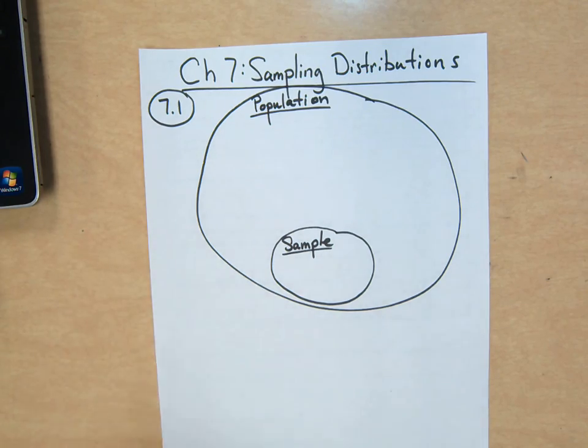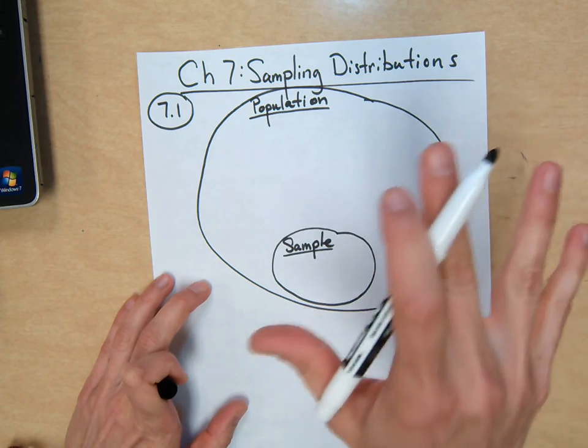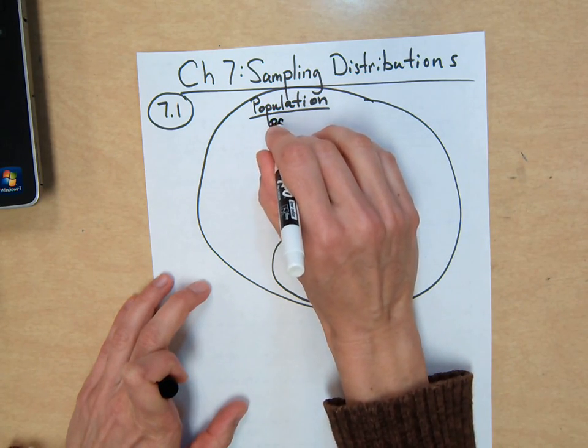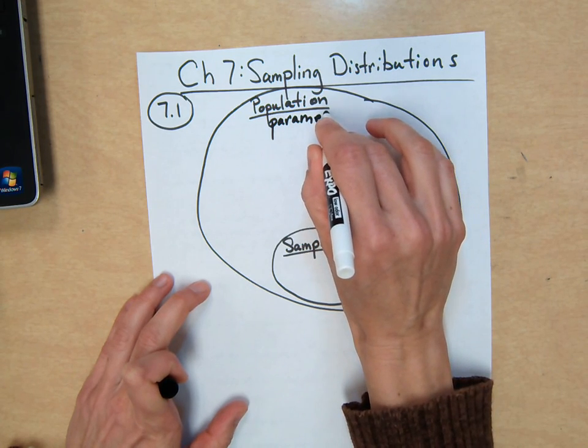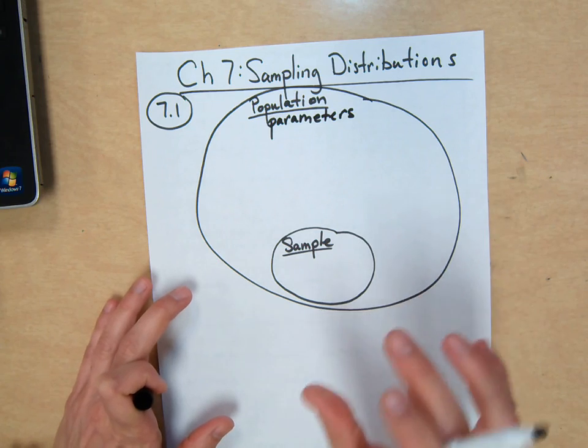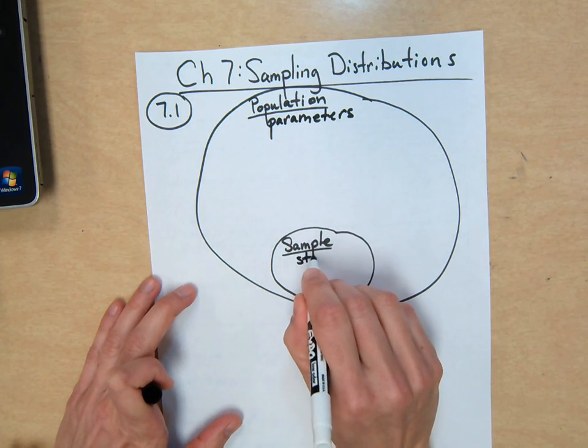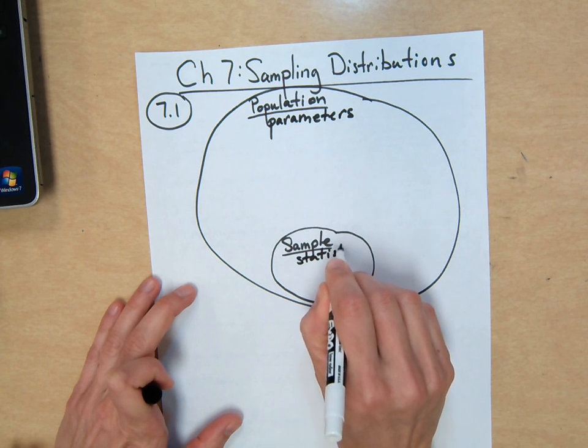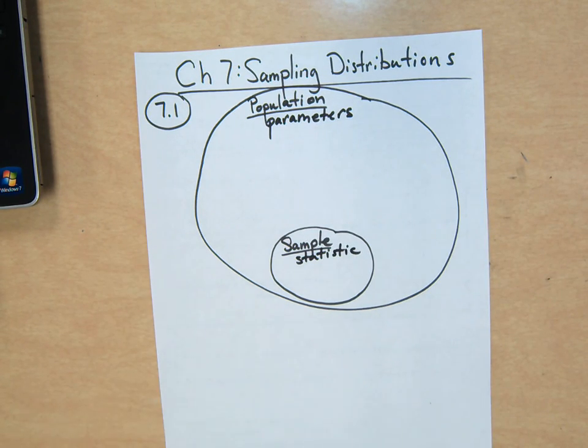So when we do this, this is the notation. Whenever we're talking about some information about the whole population, it's called a parameter. And fortunately they both start with a P. The word parameter, those are parameters. Whenever we're talking about something that's dealing with a sample, then it's actually called a statistic. If it's about the sample, it's a statistic. If it's about the entire population, it's a parameter.